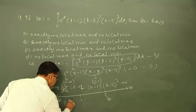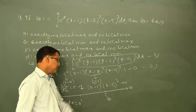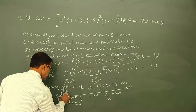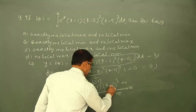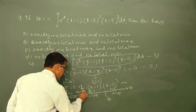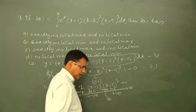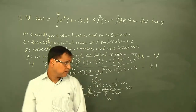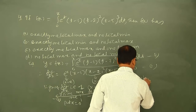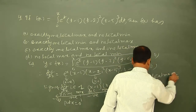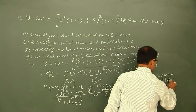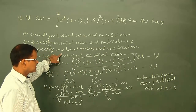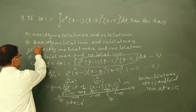Checking at x = 0: (−1)·(−5)³ = (−1)·(−) = positive. So the sign pattern is: positive for x < 1, negative for 1 < x < 5, positive for x > 5. This means y is increasing then decreasing at x = 1 → local maximum, and decreasing then increasing at x = 5 → local minimum. Final answer: f(x) has exactly one local maximum at x = 1 and one local minimum at x = 5. Choice C is correct.